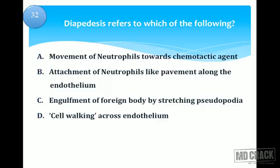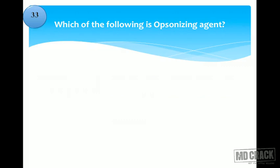Movement of neutrophils towards the chemotactic agent describes chemotaxis. Attachment of neutrophils like pavement along the endothelium describes pavementing — part of the margination, rolling, pavementing sequence. Engulfment of foreign body by stretching pseudopodia is phagocytosis. So the answer for diapedesis is cell walking across the endothelial surface.